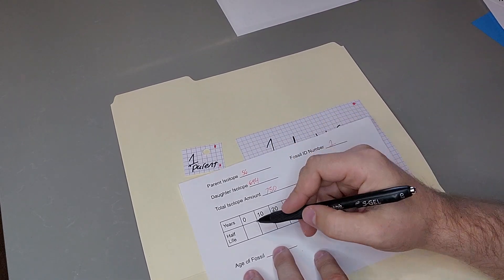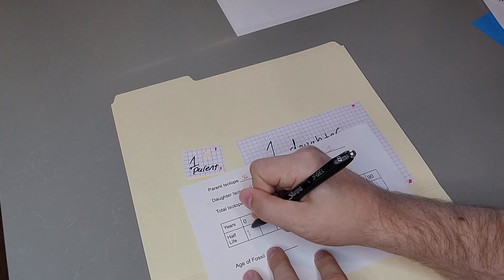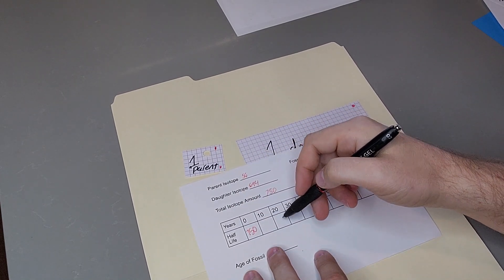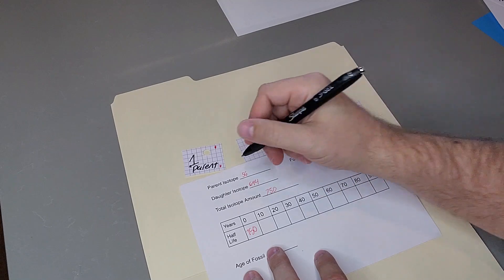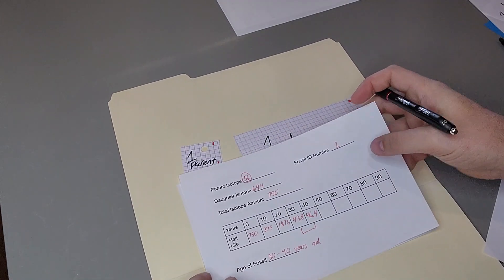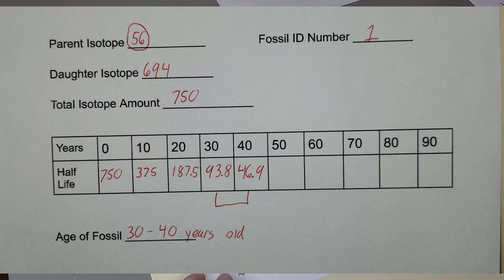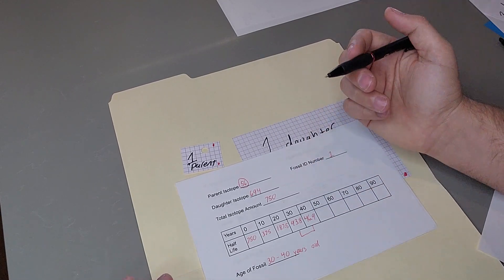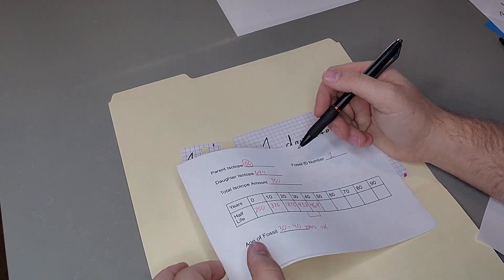So now we're going to put 750 here at year zero, and then we're going to keep dividing it by 2, dividing it by 2, divided by 2, divided by 2, until we get to the parent isotope of 56. In this case, I went ahead and divided by 2, and now between 30 and 40 years is when we get to 56. Now, again, you can change these years, but this is essentially how you do radiometric decay.